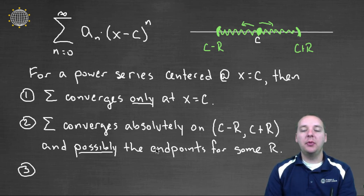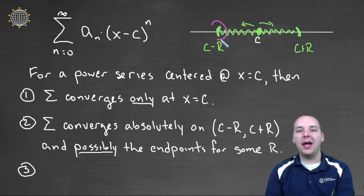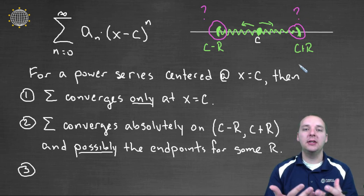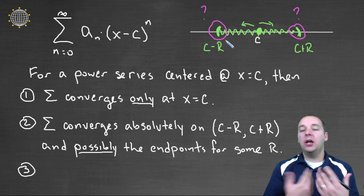And I also have one other little comment to add to number two here. It might, and I say might, converge at the endpoints as well. It will definitely converge on c minus r to c plus r, but possibly also at the endpoints as well. Now, you kind of have to just check these separately, check these independently of one another, because it could be either way.